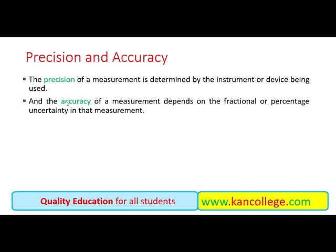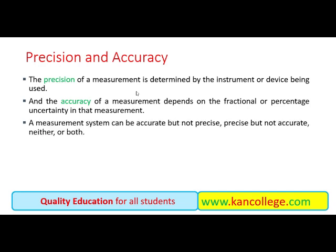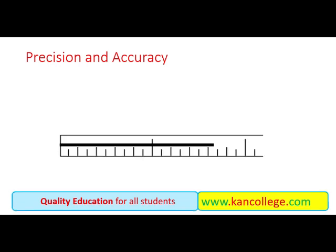In do definitions se yeh samajh aa raha hai ke precision jo hai woh instrument se determine hogi — instrument ko dekh kar pata chalega ke hamari value ki precision kitni hai, hamari measurement kitni precise hai. Aur accuracy jo hogi woh percentage uncertainty se — us measurement mein kitni percentage uncertainty hai us se andaza hoga. Is baat ko yaad rakhein ke measurement of a system can be accurate but not precise, ya precise but not accurate, and neither or both.